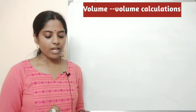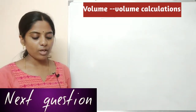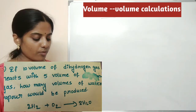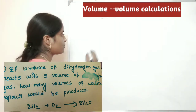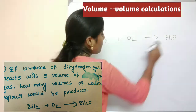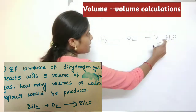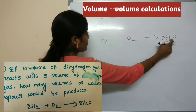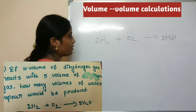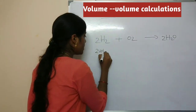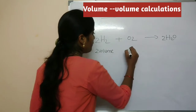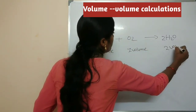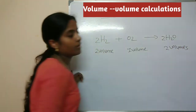Third problem: if 10 volumes of dihydrogen gas react with 5 volumes of dioxygen, how many volumes of water vapor would be produced? First, the reaction: hydrogen reacted with oxygen can form H₂O. Balancing the equation gives us 2 volumes of hydrogen reacting with 1 volume of oxygen to form 2 volumes of water vapor.